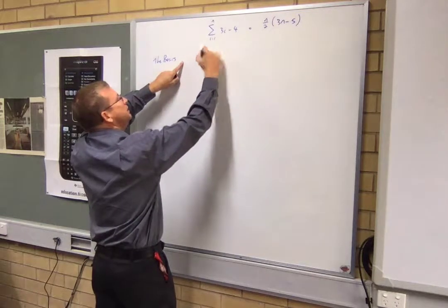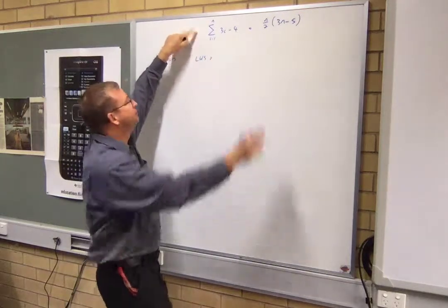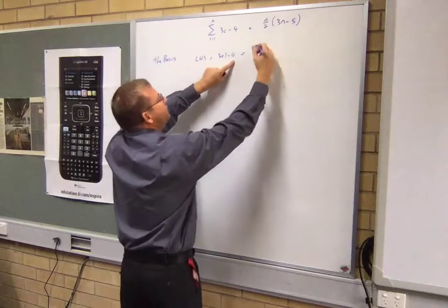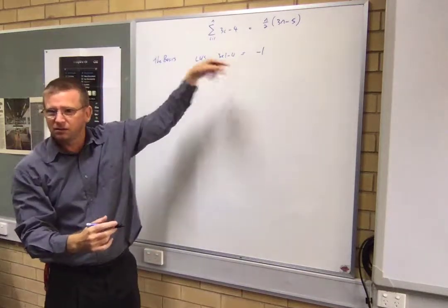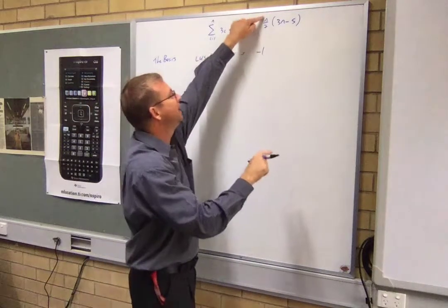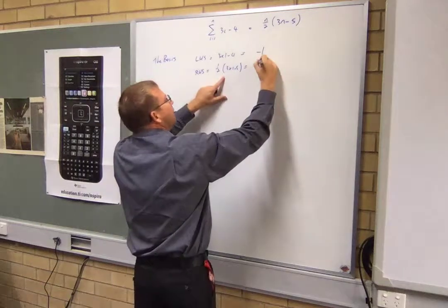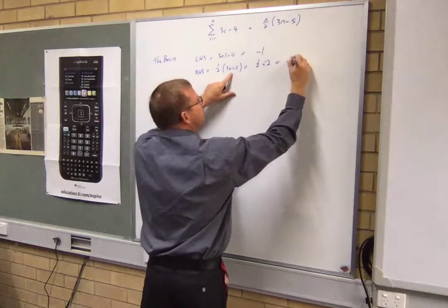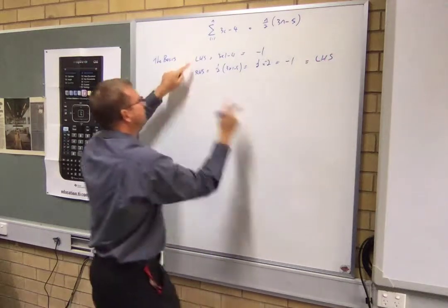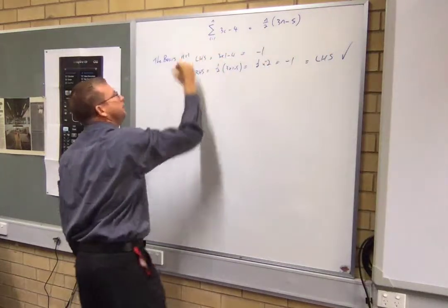So exactly what I just rubbed off, the basis means I'm going to take my left hand side, which is this side, and work out when there's one term, let's add them all up. So if i is one, it's the first term, so it's going to be three times one minus four, three minus four is, can you remember us getting that last, before I rubbed it off? Okay. The right hand side is, I'm going to put one in here, equals, it equals negative one.